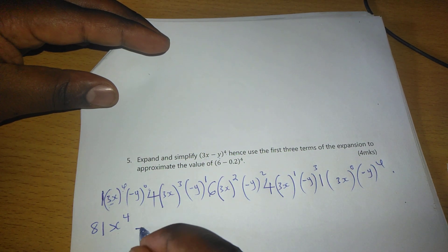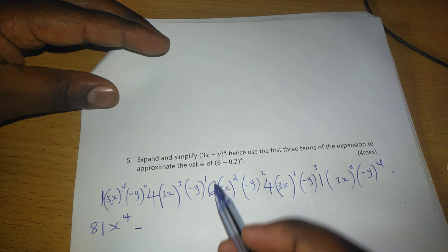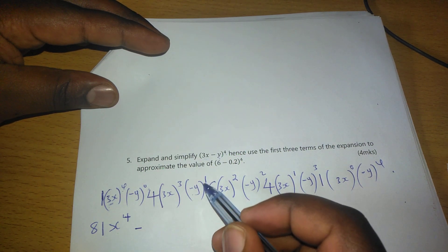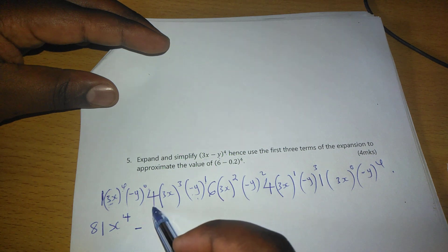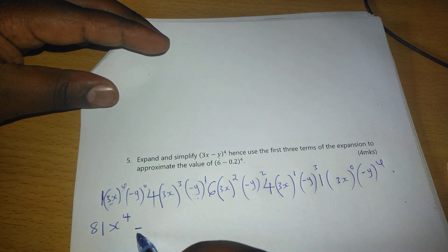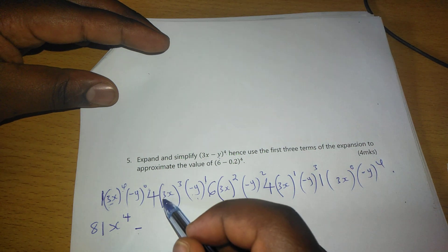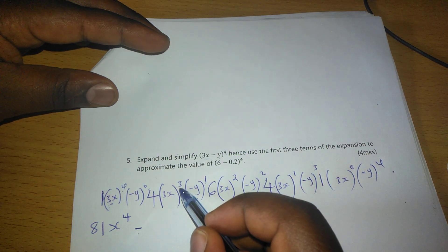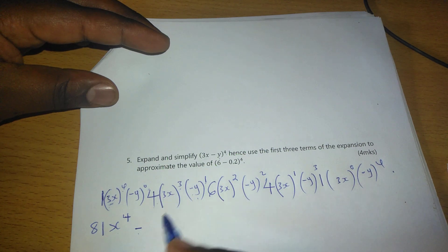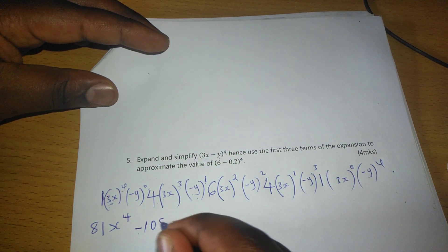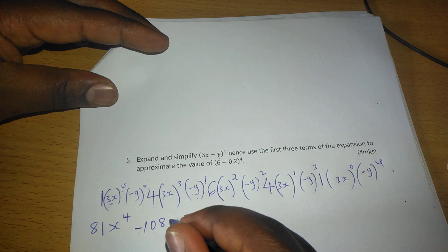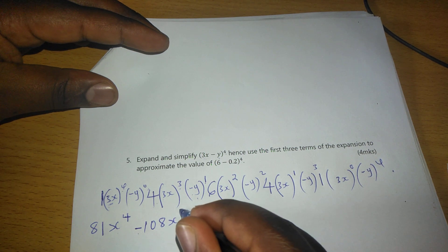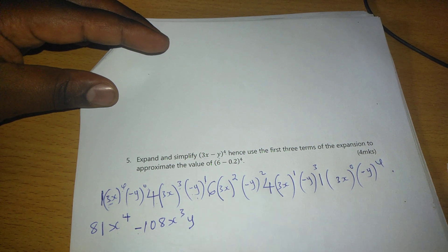Here we will have a minus because -y raised to 1, the negative 1 is multiplying everything here, and we will have a resulting negative sign. So 3^3 is 27, 27 times 4 becomes 108. Then we will have x^3, and y now is introduced.